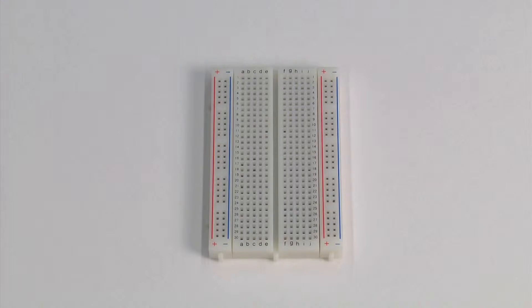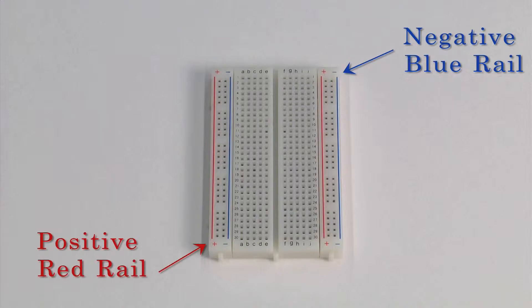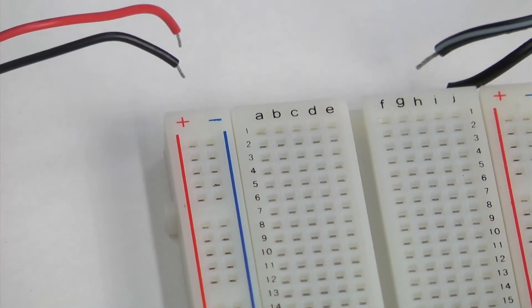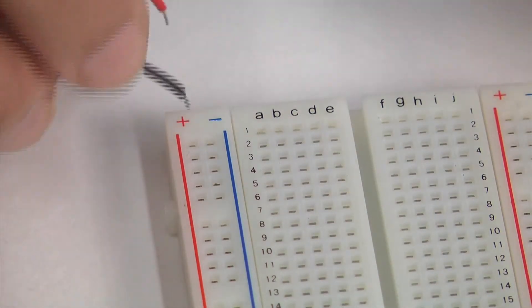For our purposes, we will be using the negative blue rail on the right and the positive red rail on the left. So that a good connection is ensured, it is important that the wire ends are inserted straight into the holes on the breadboard.